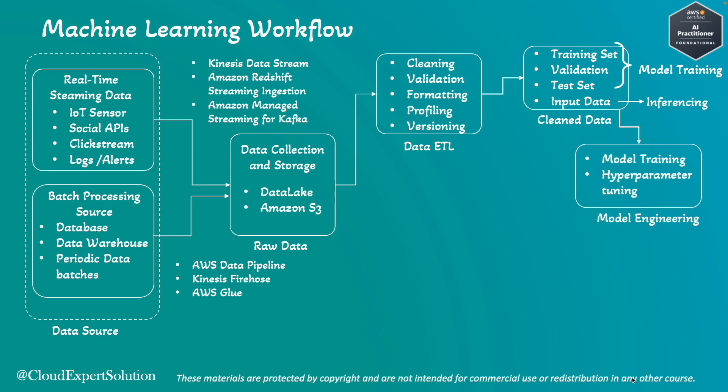The next step is model engineering, where you need to train the model. While training, you also need to do model tuning — that is, hyperparameter tuning — such as changing the learning rate or the number of epochs, which determines how many times you iterate over the dataset. Once the model is trained, this stage is called model engineering.